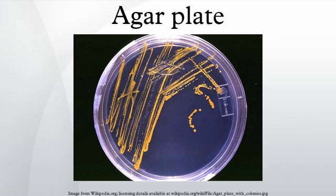MacConkey agar is a selective and differential medium used to differentiate between Gram-negative bacteria while inhibiting the growth of Gram-positive bacteria. The addition of bile salt and crystal violet to the agar inhibits the growth of most Gram-positive bacteria, making MacConkey agar selective. Lactose and neutral red are added to differentiate the lactose fermenters, which form pink colonies, from lactose non-fermenters that form clear colonies.